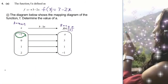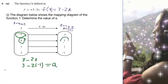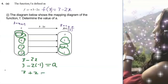Now we need to find the value of a when x is negative 1. I substitute x equals negative 1 into the function: 3 minus 2 times negative 1. Negative times negative is positive, so that becomes 3 plus 2, which equals a. Therefore 3 plus 2 is 5, so a equals 5.